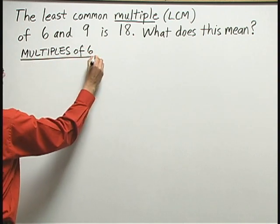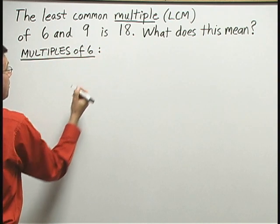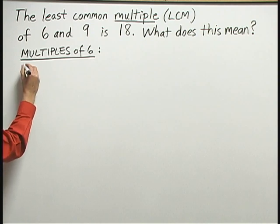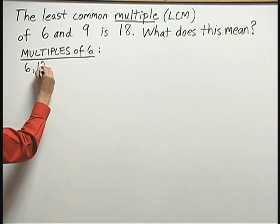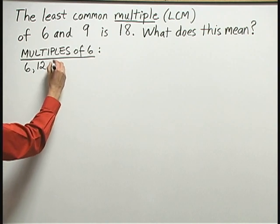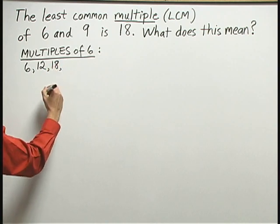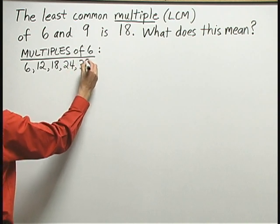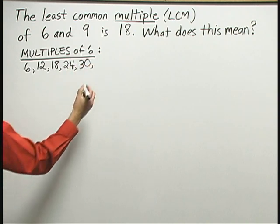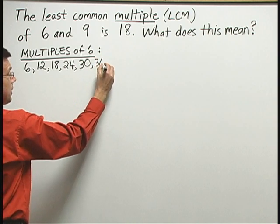The multiples of 6 are the numbers 1 times 6, which is just 6. 2 times 6 is 12. 3 times 6 is 18. 4 times 6 is 24. 5 times 6 is 30. They go on and on. 6 times 6 is 36.